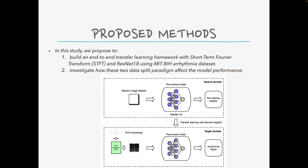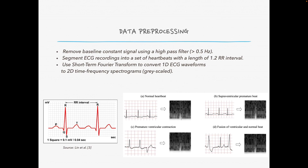As we have seen from the previous slides, those ECG recordings are 1D waveform signal data. In order to conform to the input requirement of ResNet-18, we need to pre-process those data. In the data pre-processing stage, we firstly remove the baseline constant signals using a high-pass filter. Then we segment the ECG recordings into a set of individual heartbeats with a length of 1.2 RR intervals. Specifically, we first identify the R-peaks in those ECG signals, and then we take two consecutive R-peaks to form an individual heartbeat. The length is set to 1.2 RR intervals to include the left margin of the first R-peak and the right margin of the second R-peak. Next, we use the short-term Fourier transform to convert the 1D ECG heartbeats into 2D time-frequency spectrums. Those images are grayscale. Here, we present some examples of converting certain types of heartbeats into 2D images.